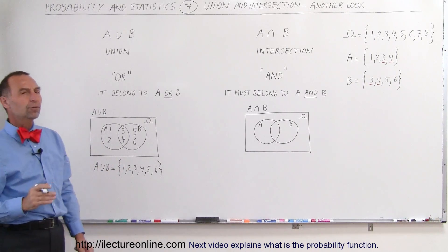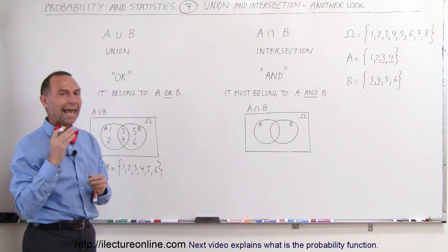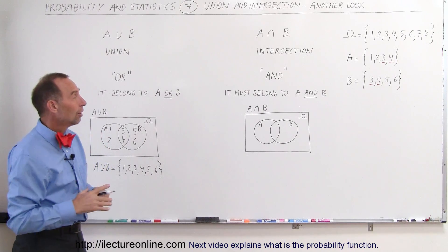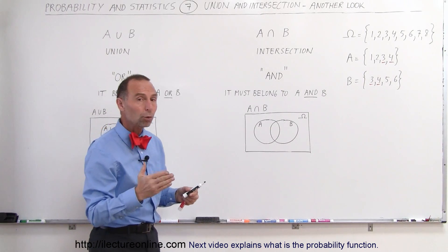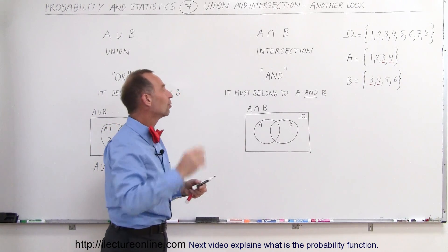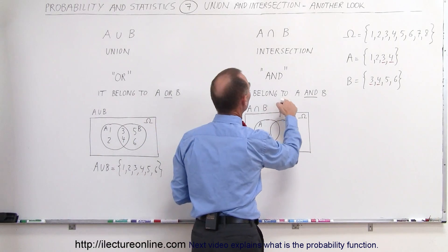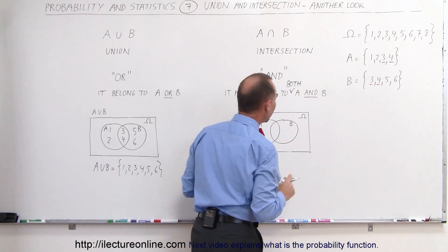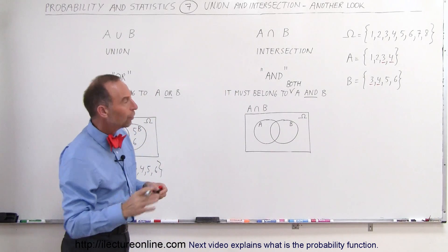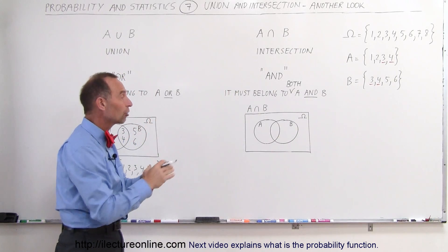When we talk about the intersection, there we can substitute the word and. So it's a logic symbol and. For it to belong to the intersection, it must belong to both A and B.